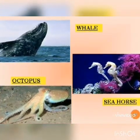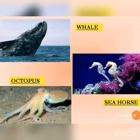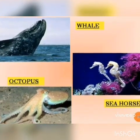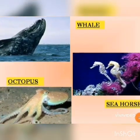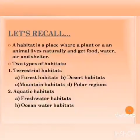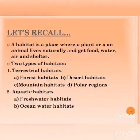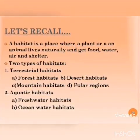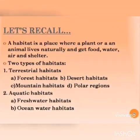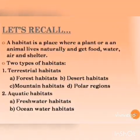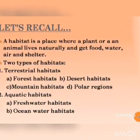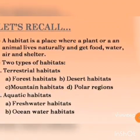Now let's recall whatever we have learned in this video. First is habitat — a habitat is a place where a plant or animal lives naturally and gets food, air, water and shelter. Habitats are of two types: first is terrestrial habitat and second is aquatic habitat.